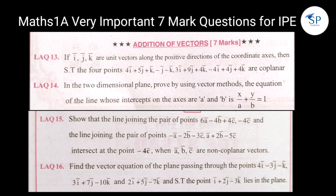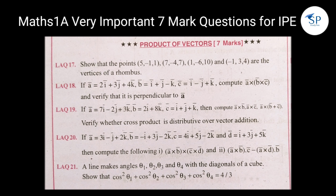Next third question: show that the line joining the pair of points 6a − 4b + 4c, −4c and the line joining the pair of points −a − 2b − 3c, a + 2b − 5c intersect at the point −4c, where a, b, c are non-coplanar vectors. And last question: find the vector equation of the plane passing through the points, and solve that the point i + 2j − 3k lies in the plane. Next product of vectors — we have five problems. First problem: show that the given three or four points are vertices of a rhombus.